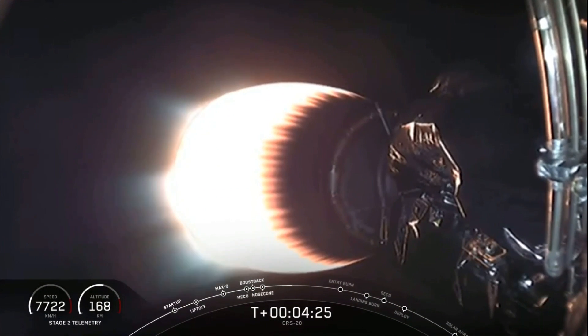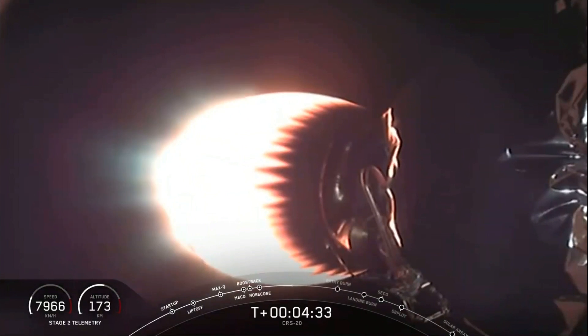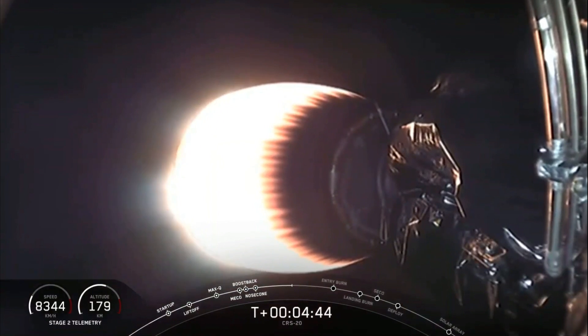And shortly after this first burn is initiated, the grid fins which are located near the top of the first stage are deployed to help guide the rocket during descent. We're not showing a live view of the first stage right now because it's pretty dark, so you can't see it. But what you're seeing on your screen is the second stage continuing on its way to its targeted orbit.